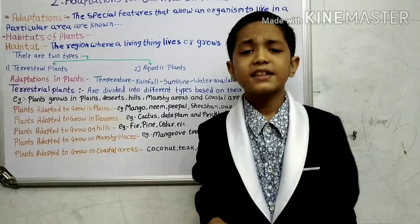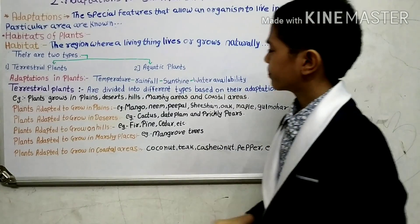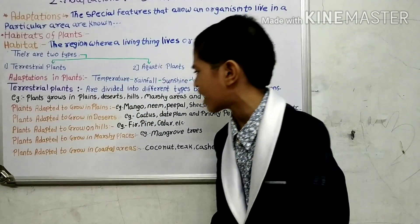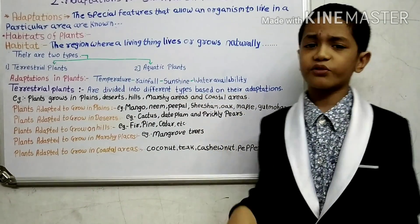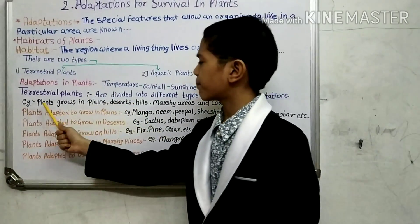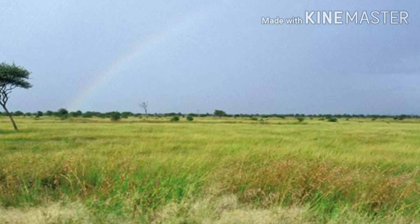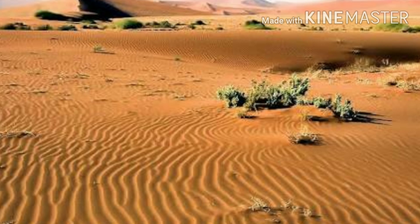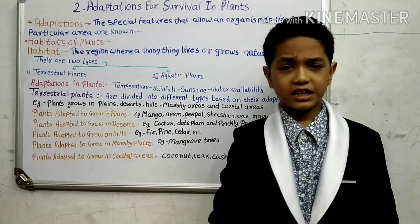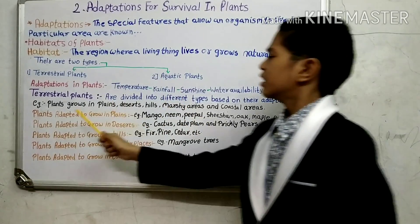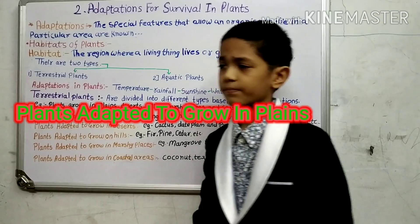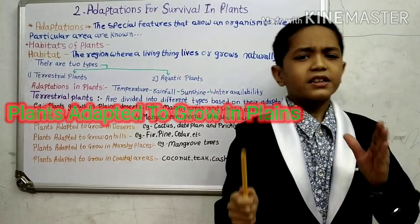Terrestrial plants can be of different kinds on the basis of their adaptation to suit a particular area. For example, different types of plants grow in plains, deserts, hills, marshy areas, and coastal areas. Now, plants adapted to grow in plains — in plains the climate is warm to hot in summer and cold in winter.